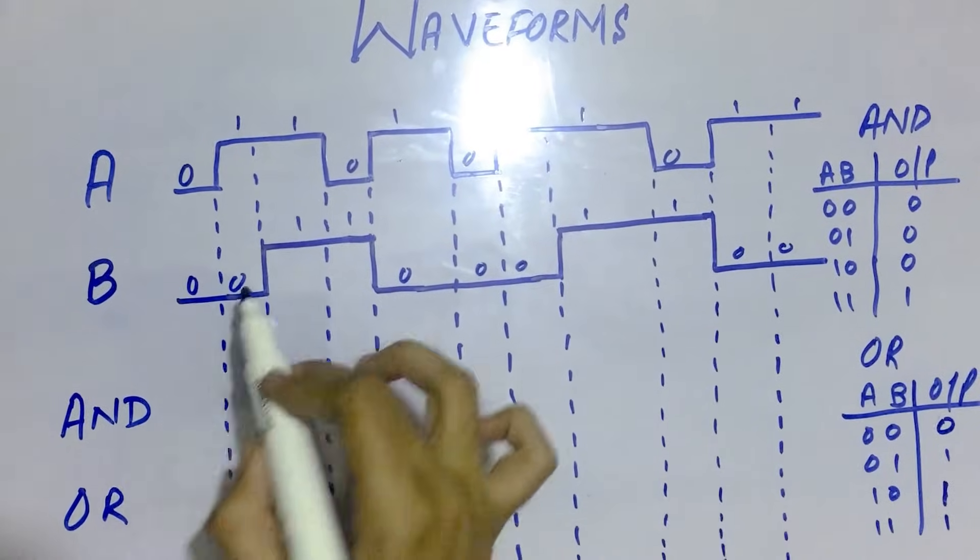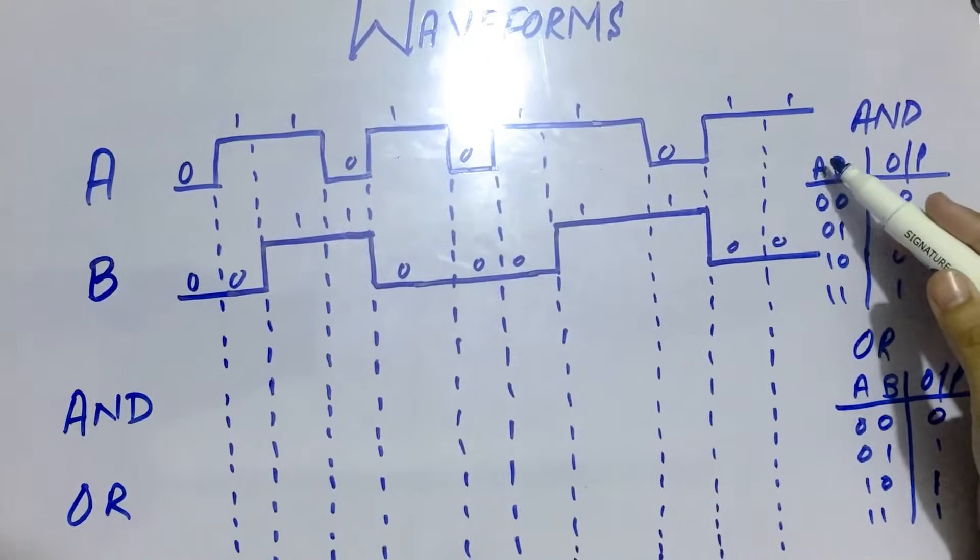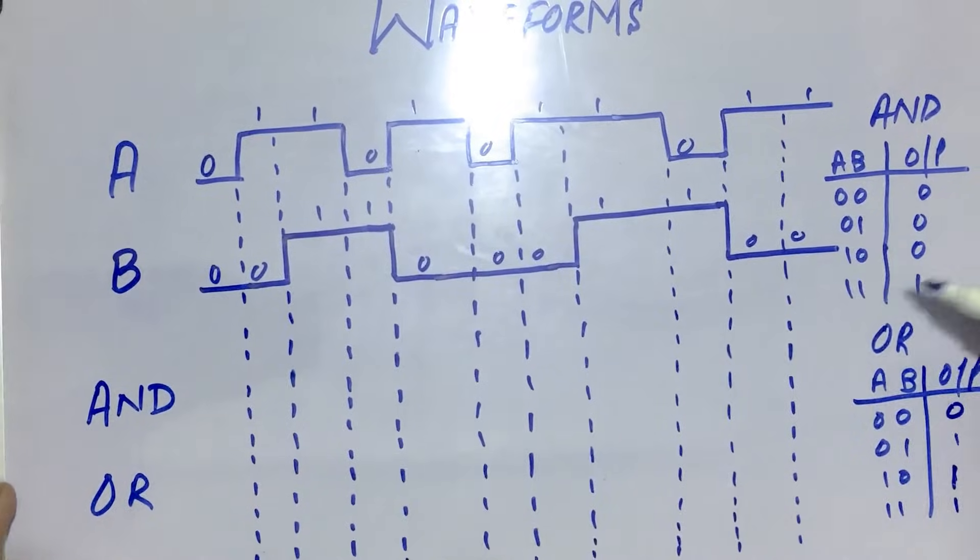When we make the waveform of the AND gate, when A and B are both 0 the output is 0; 0 and 1 is 0; 1 and 0 is 0; and 1 and 1 is 1.